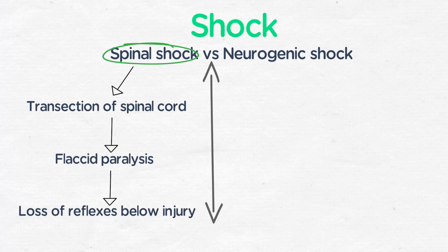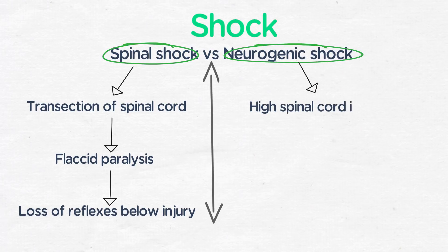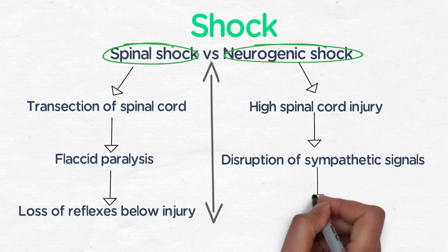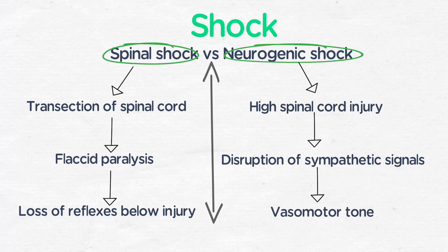Note that the use of the word shock does not actually refer to hypotension. In contrast, neurogenic shock results from high spinal cord injuries and results in disruption of sympathetic signals coming from the brain. Loss of vasomotor tone, causing generalized vasodilation, bradycardia, and circulatory collapse will ensue.